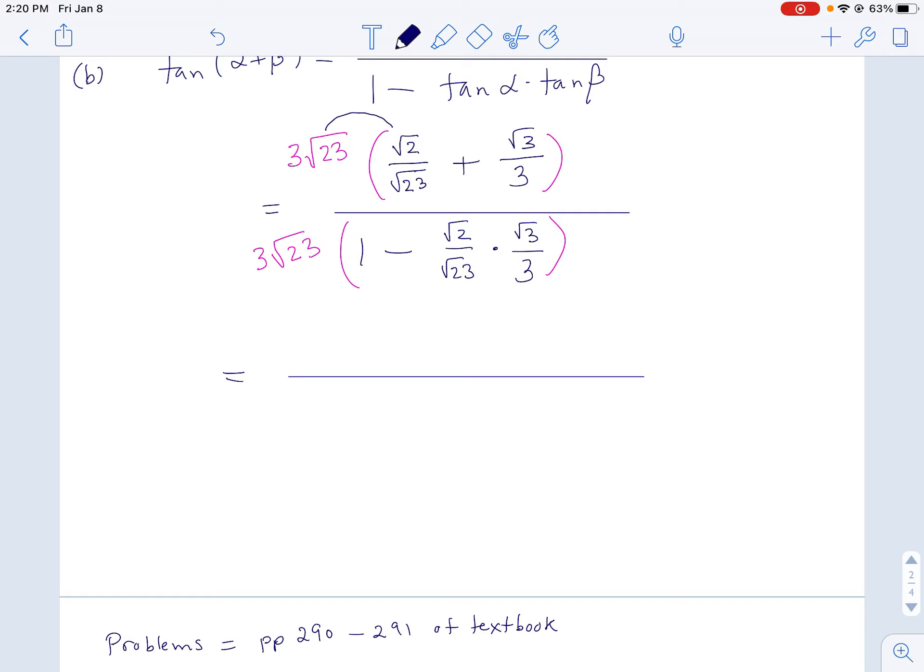The root 23s cancel and I get a 3 root 2, plus, and then I get 3 root 23 times root 3 over 3 and the 3s cancel. And I actually get root 23 times root 3, which is root 69.